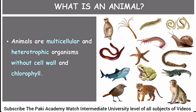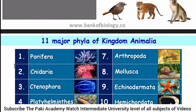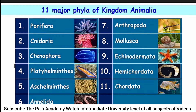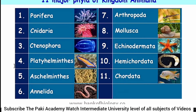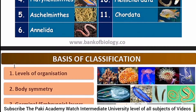Animals have only cell membranes. Now there are 11 major phylums of Kingdom Animalia: Porifera, Cnidaria, Ctenophora, Platyhelminthes, Aschelminthes, Annelida, Arthropoda, Mollusca, Echinodermata, Hemichordata, and Chordata.